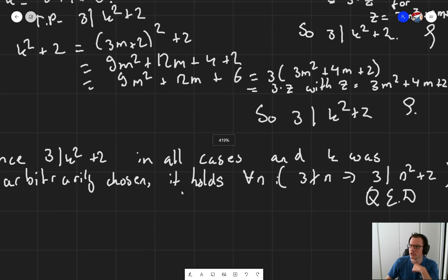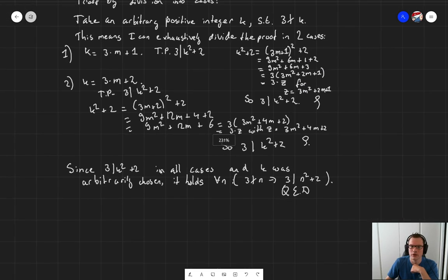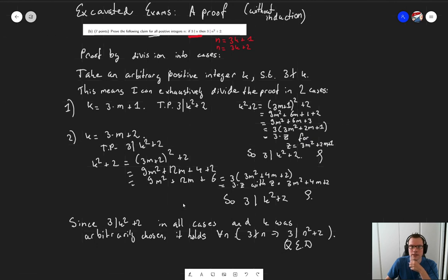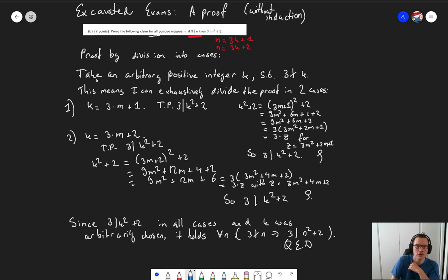And there you have it. I'll zoom out a little bit so that you can see the full proof in one go. Here is our proof by division into cases for this claim. Remember, it's still a for all statement. So we also have the proof by generalization strategy, which is recognizable by this first and this last sentence. But we also have our proof by division into cases with our cases and the concluding sentence there.